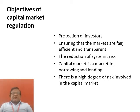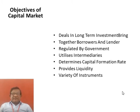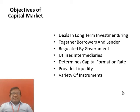Number two is bringing together borrowers and lenders. The capital market acts as a mediator between the borrowers and lenders of money. It connects persons having surplus funds with those who are in deficit of money. Capital market directs people having savings to different productive investment avenues, helping to provide long-term funds to borrowers by attracting large investments from people.